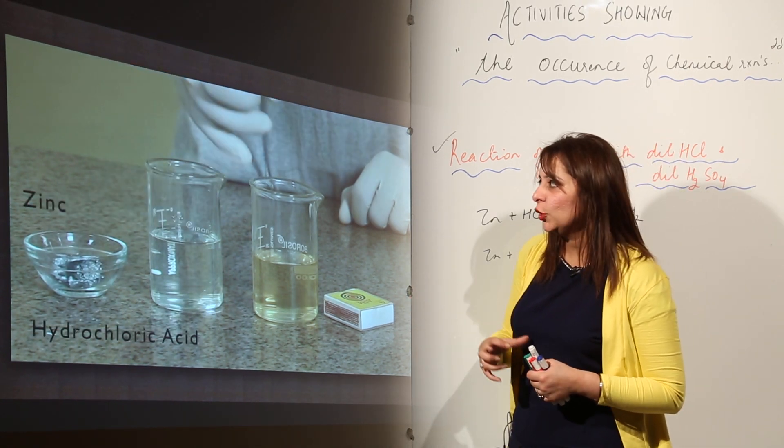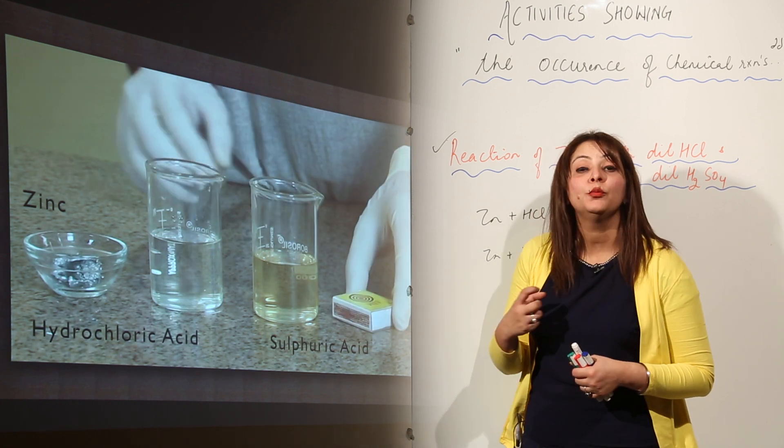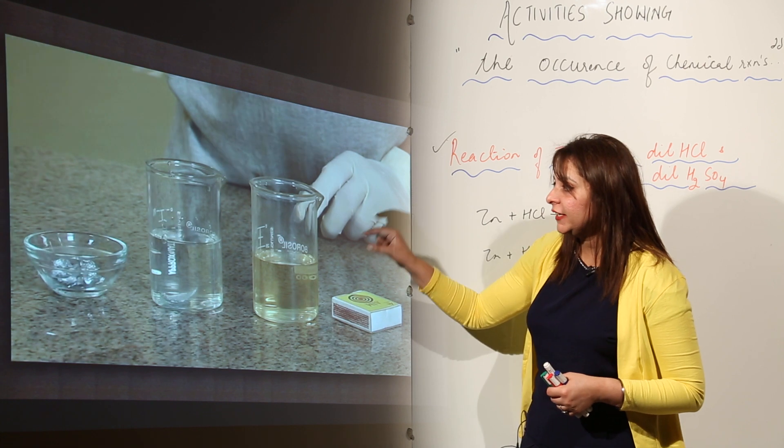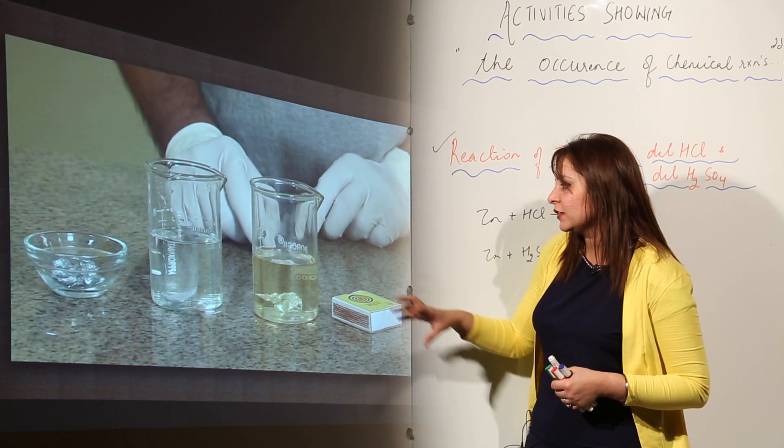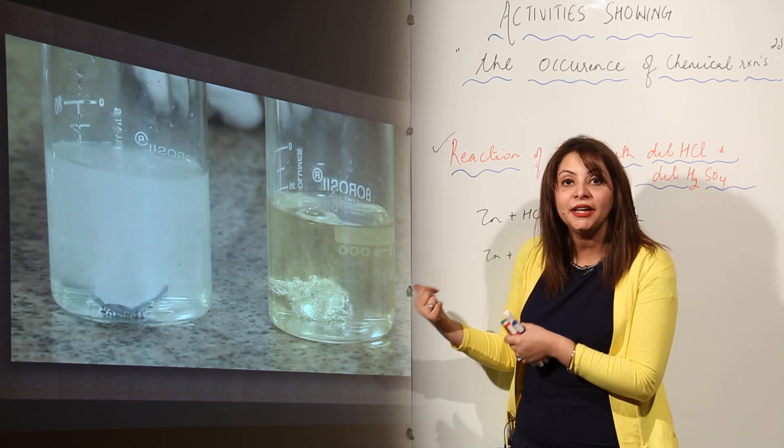We have zinc granules, we have the beaker with HCl, we have the beaker with sulfuric acid, and both the acids are dilute in nature. Now we are going to add zinc granule in HCl and the same mass zinc granule in the dilute H2SO4.